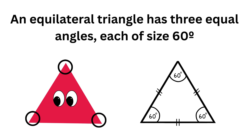An equilateral triangle has three equal angles, and each one will always be 60 degrees — there won't be any deviation from that. An equilateral triangle will always have three equal angles each at 60 degrees. Here on the left-hand side I've circled each vertex because each one is the same size, and that identifies the triangle as an equilateral triangle.